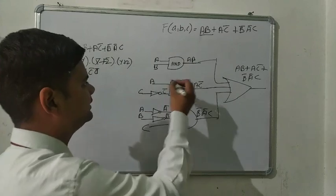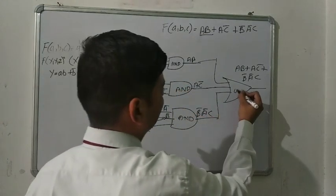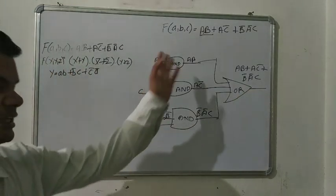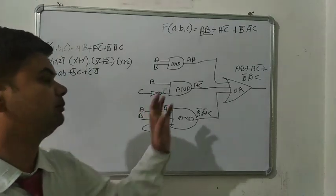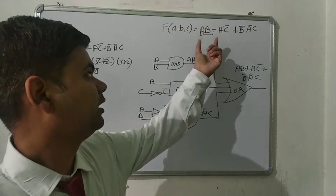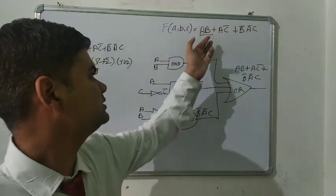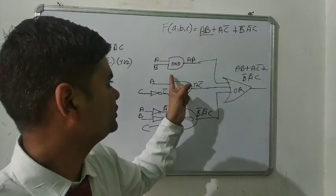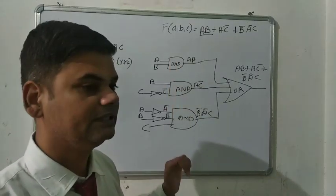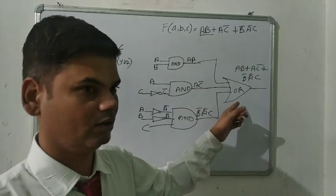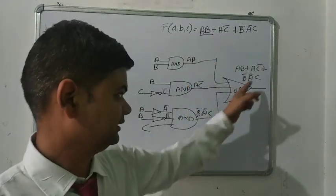So the final output uses AND gates and an OR gate. Whenever you see no symbol between variables, that means it is the multiply symbol — and multiply means AND gate. For AB use AND gate, for AC̄ use AND gate, then again AND gate. Whenever all three AND gates are completed we use the OR gate to combine them, and that is the final output.